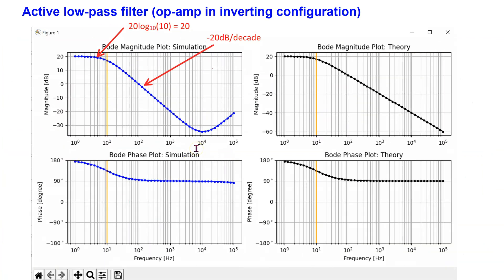When we simulate this circuit in Python, we obtain the frequency response. The break frequency is 10 Hz, marked on the plots. For frequencies less than 10 Hz, the filter provides a gain magnitude of 10, which is 20 dB. For frequencies higher than 10 Hz, the attenuation is minus 20 dB per decade. As before, at very high frequencies, op-amp frequency limitations lead to non-linear behavior, and the simulation result differs from the theory result.